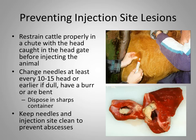It's very important to prevent injection site lesions by properly restraining cattle. The best way is to put them in a chute with their head caught in the head gate before injecting. If we try to inject cattle in a snake or alleyway, the cattle will bounce around, the needle will go in and out of the muscle, causing more tissue damage, and we may break off the needle — which is a food safety issue. Needles should be changed at least every 10 to 15 head, or earlier if they are dull, bent, or have a burr, as dull needles increase tissue damage and the risk of broken needles.